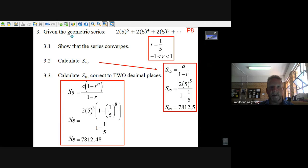Here's the first example, question three. They give us this geometric series: the first term is 2(5^5), the next one's 2(5^4), the next term is 2(5^3). So it looks like the powers of five are going down. You're dividing by five each time, so r is 1/5.